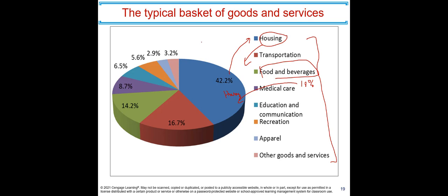Also, in the economy some good prices are increasing — say meat rises 18 percent — but cereals may drop three percent. Inflation is an increase in average prices. When you average out the food category, the overall food price increase might be only four to five percent, and only 14.2 percent of that feeds into the overall inflation rate.